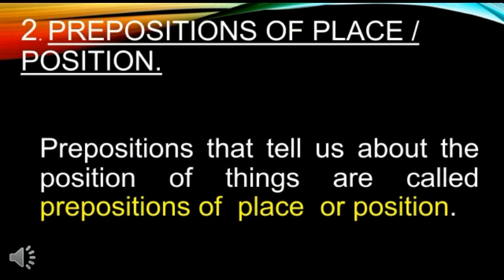Second, prepositions of place or position. Prepositions that tell us about the position of things are called prepositions of place or position. They give us information about the place, location, or position. It means the prepositions of place are used to refer to the place where something or someone is located.